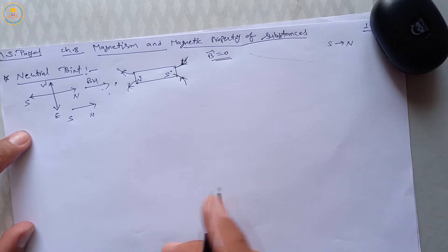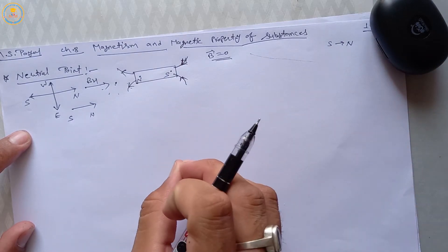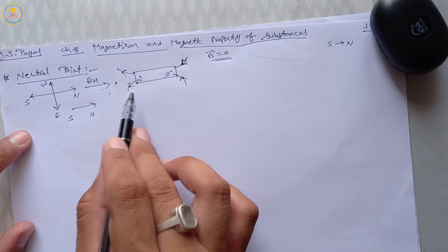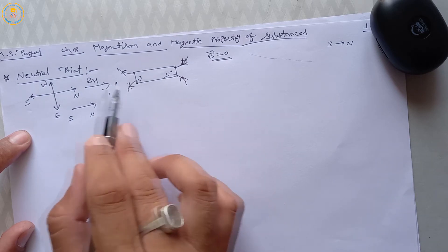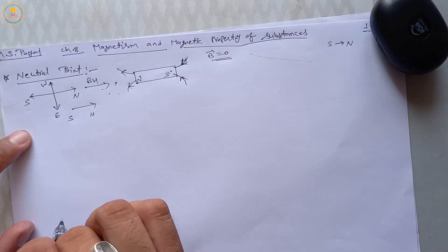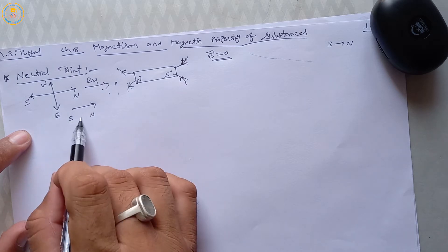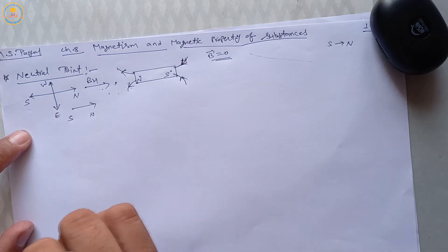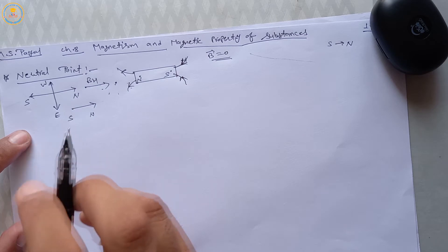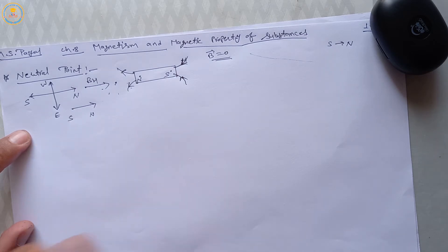The point where the magnetic field due to a magnet is equal and opposite to the horizontal component of Earth's magnetic field — these points are called neutral points. At neutral points, magnetic field intensity is equal to zero.